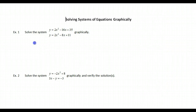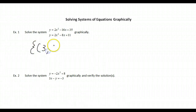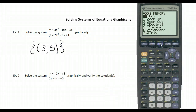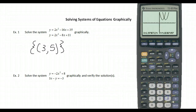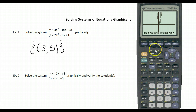The solution set is the ordered pair (3, 5). We can zoom out to examine this further and see the two equations plotting. You can see how one will always be inside the other, so we only have that one solution set.